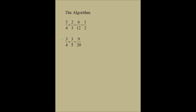Or let's say you had 3 fourths times 3 fifths. You multiply 3 by 3, you get 9. You multiply 4 by 5, you get 20. So the answer is 9 twentieths.